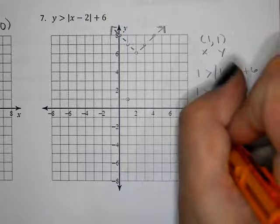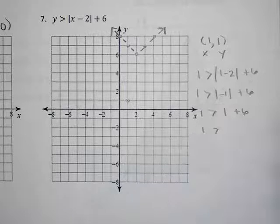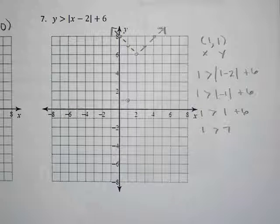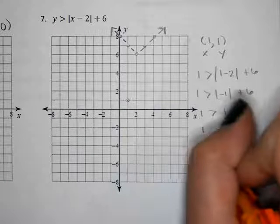So take negative one, make it positive plus six, and one plus six is seven. Is it true that one is bigger than seven? No, that's not true. That's false.